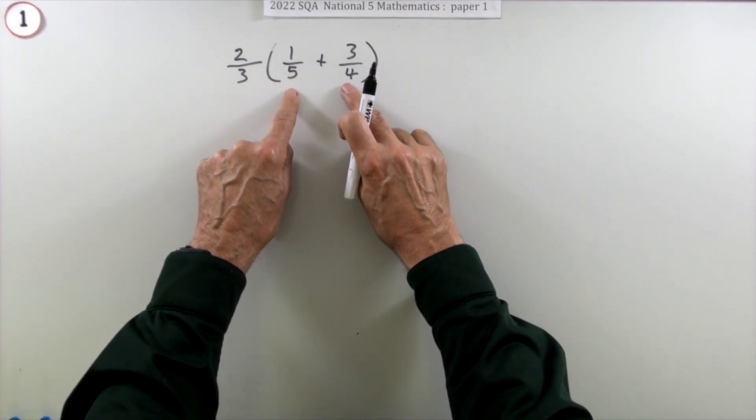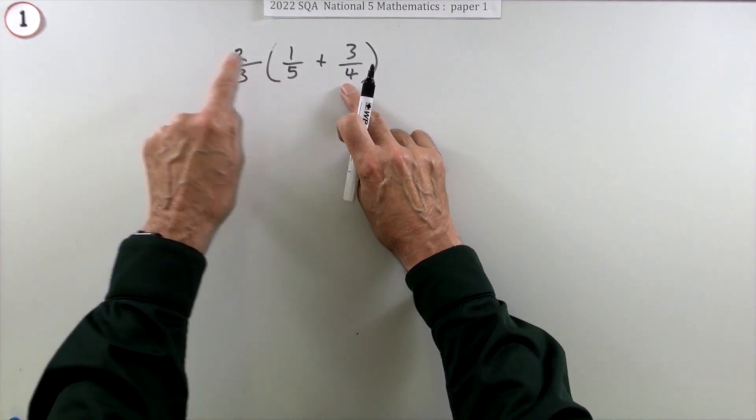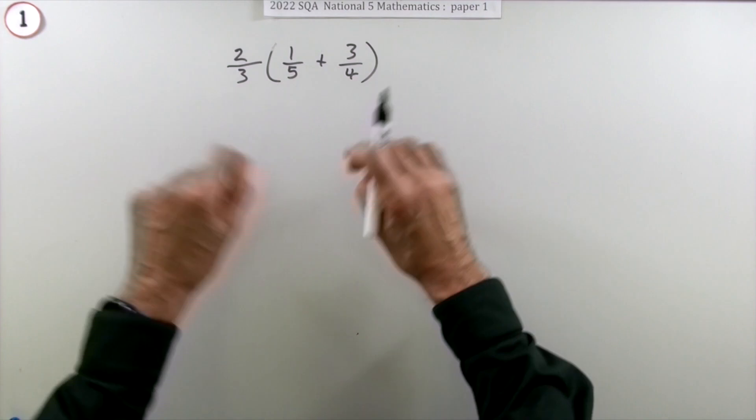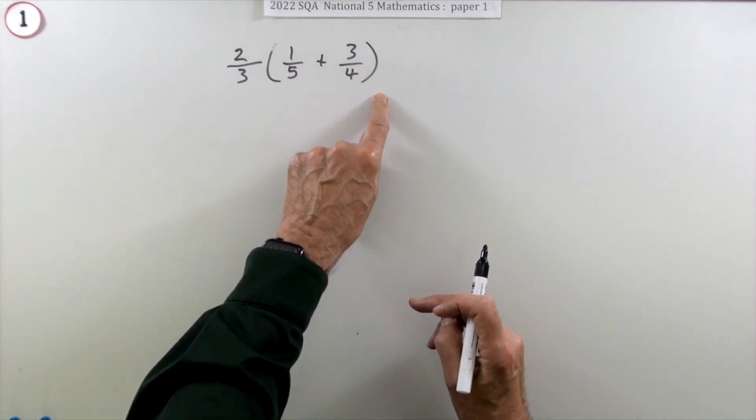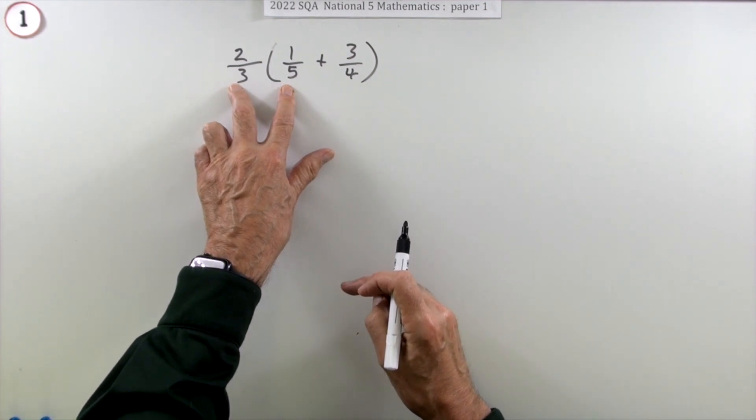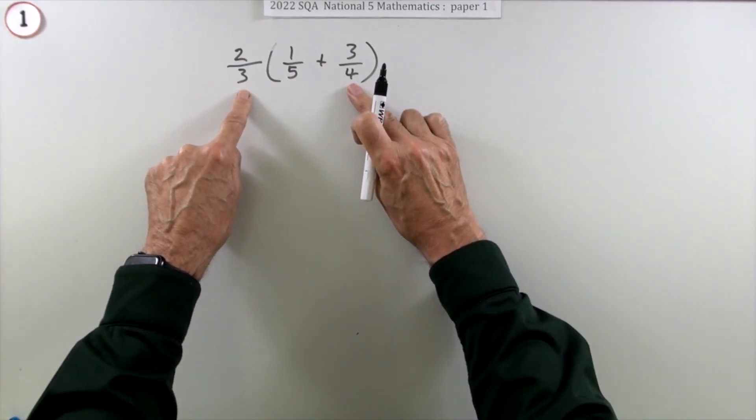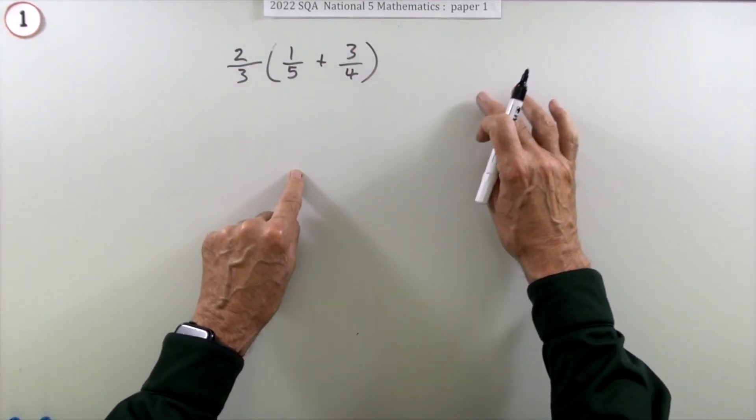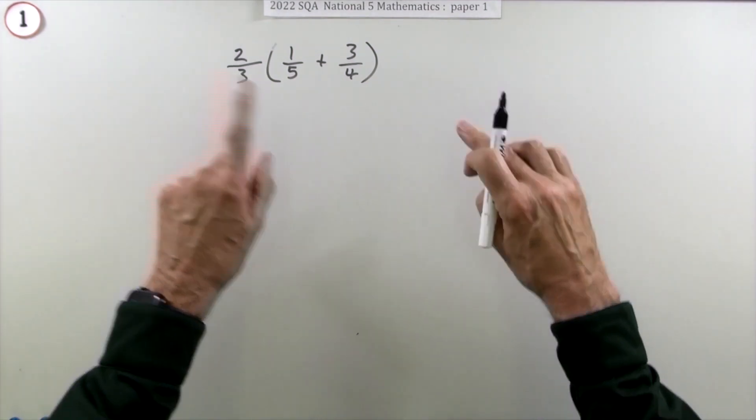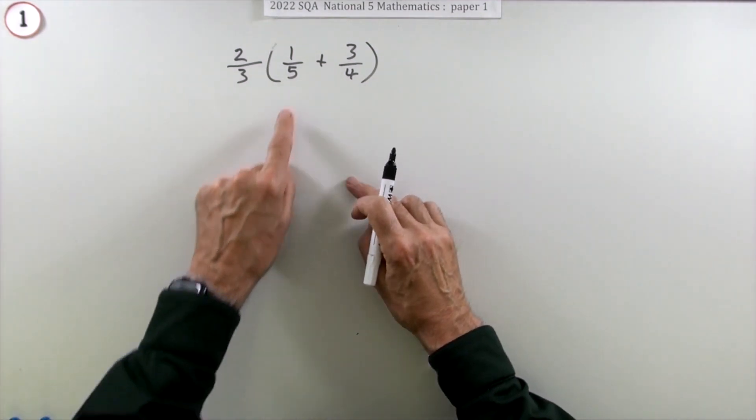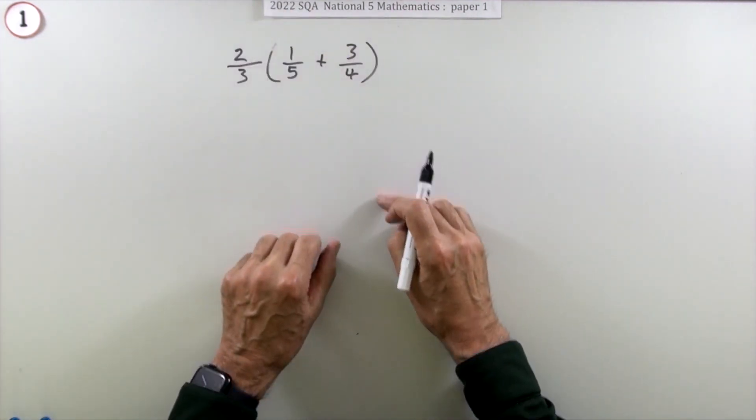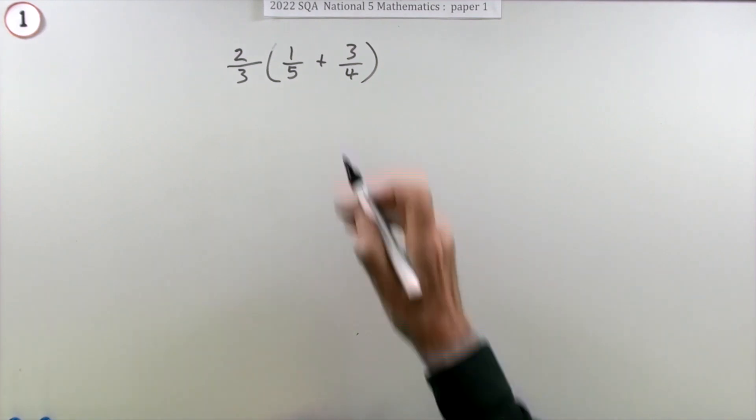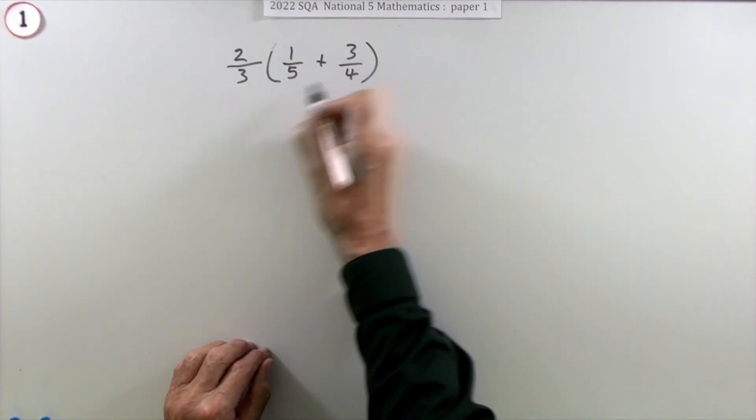If you take it at face value, that would be do the brackets first, carry out this addition, and then once you've got the answer to that, multiply it by two-thirds. Those would be the two marks, one for each of them. You could also multiply out the brackets and do this multiplication, and then add the two answers, but that would be three things. We'll do it both ways. But what you shouldn't do is just ignore the brackets and do a multiplication, and once you've got the answer just add on a fraction as if those brackets weren't there.